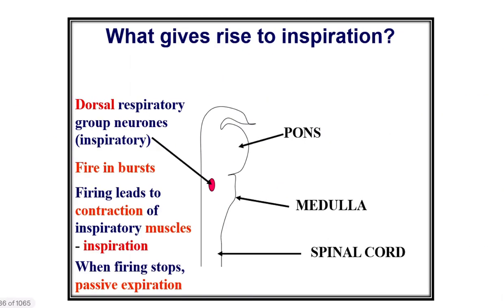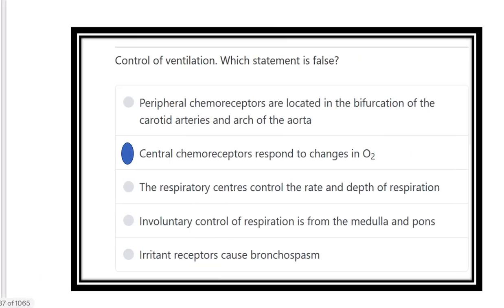There are different types of respiratory centers. The dorsal respiratory group neurons are inspiratory neurons responsible for triggering inspiration when firing. When they stop firing, passive expiration occurs.